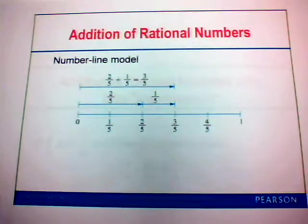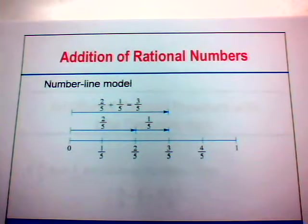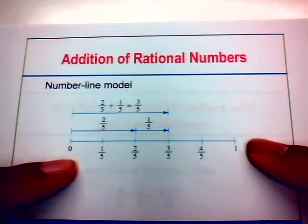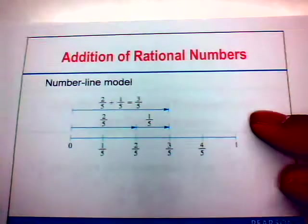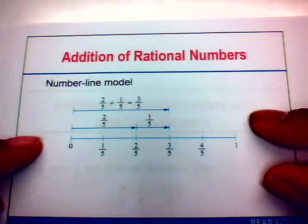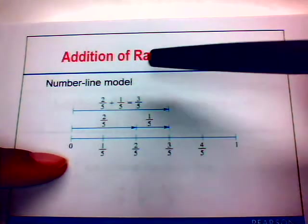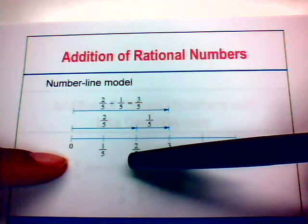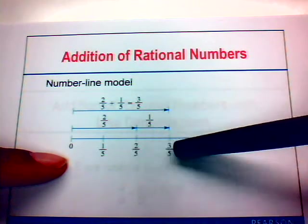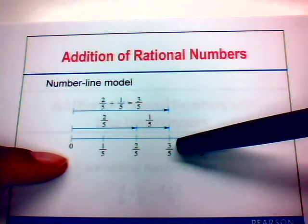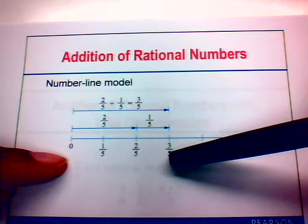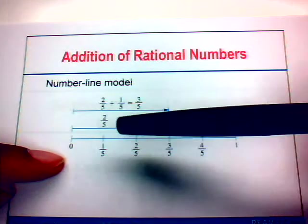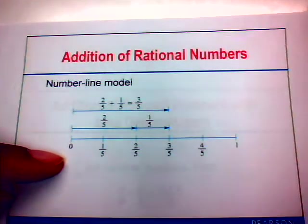The second model is a number line model. In this case, we have a number line from zero to one, and notice that it's sectioned in fifths. If we add two-fifths by going two-fifths of the way from zero, and then add another one-fifth — that's another one-fifth of the way from two-fifths — we end up at three-fifths. So this number line model is a representation of two-fifths plus one-fifth equals three-fifths.